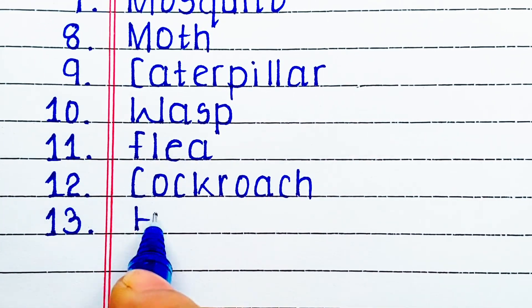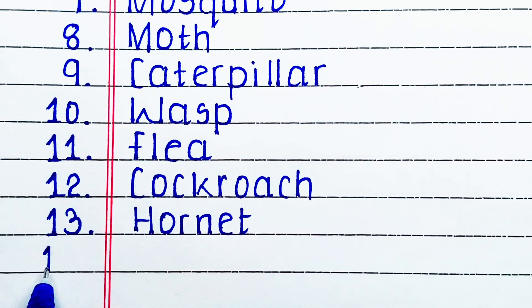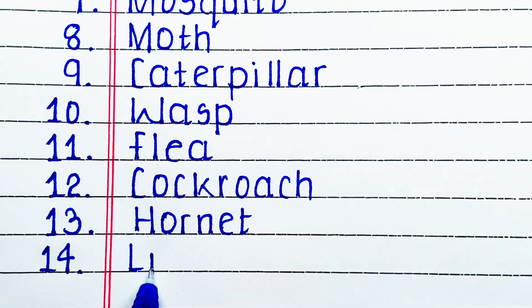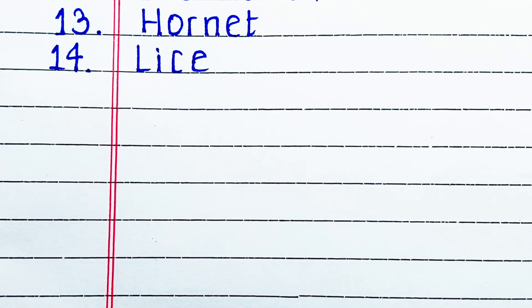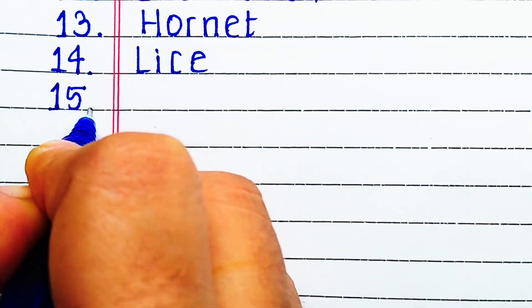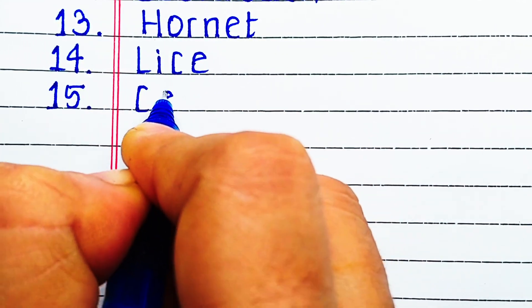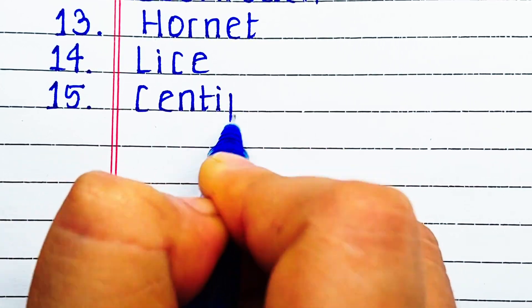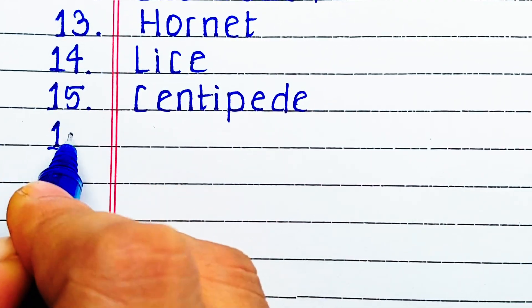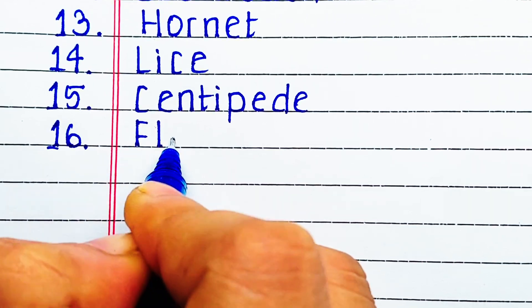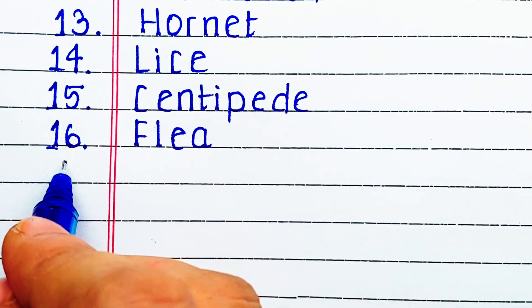Next is H-O-R-N-E-T, hornet. Next L-I-C-E, lice. Next up we have C-E-N-T-I-P-E-D-E, centipede.